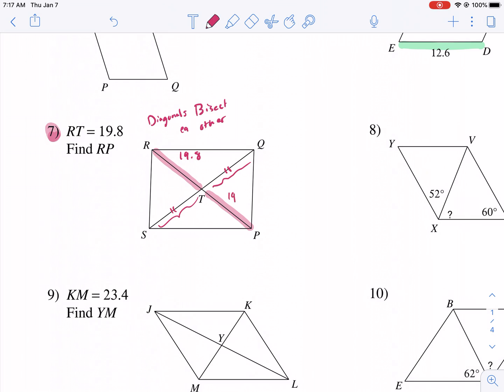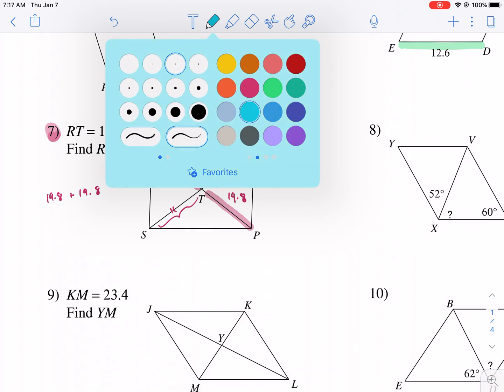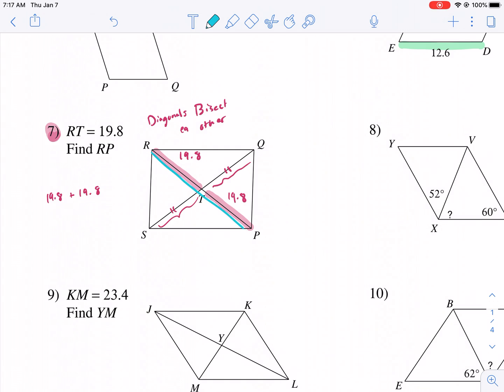So if that's 19.8, then this is also 19.8. And we can simply add the two because they bisect each other. So that means those two components add together. So because we're trying to find RP, RP is the total length. So let me highlight that. RP is this total length there. So that will be equal to RP. RP, so we get 39.6 equals RP. And it's as simple as that.